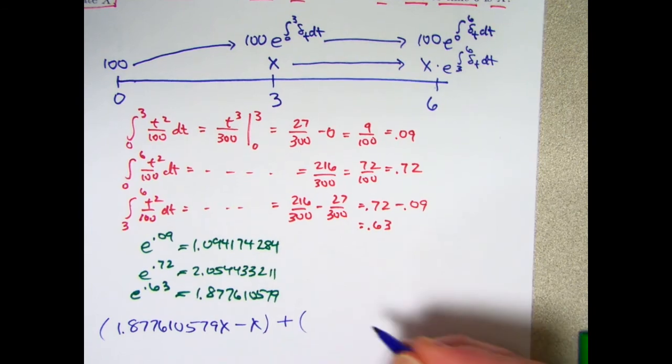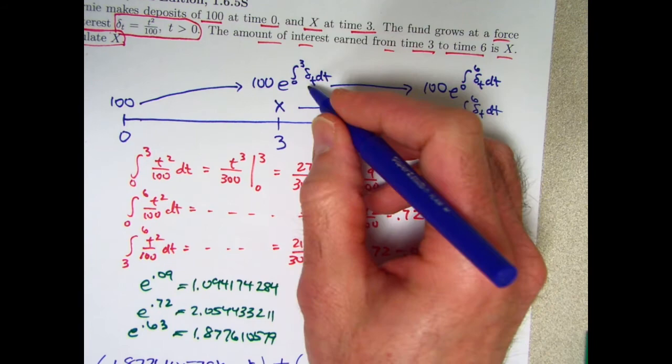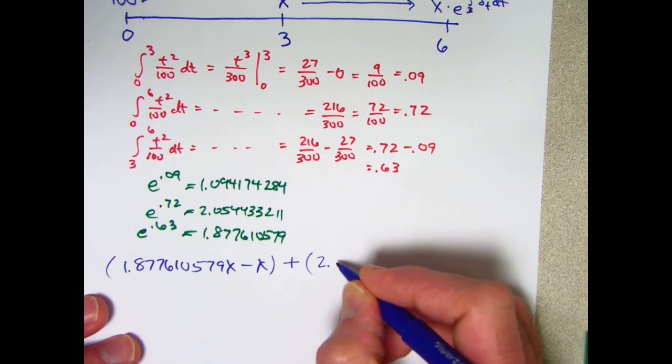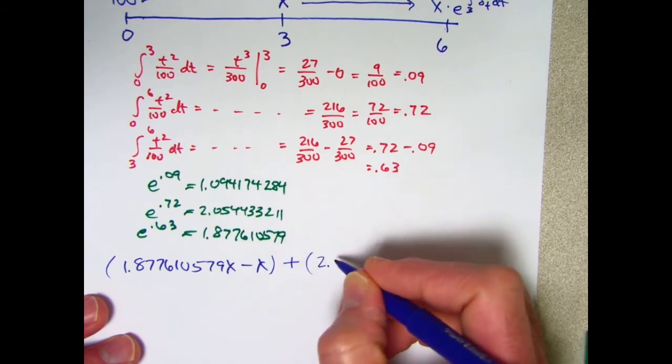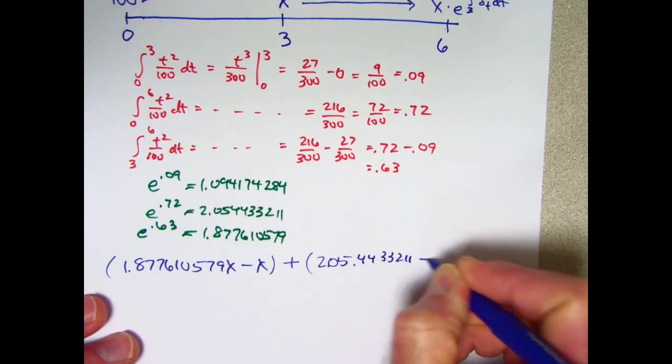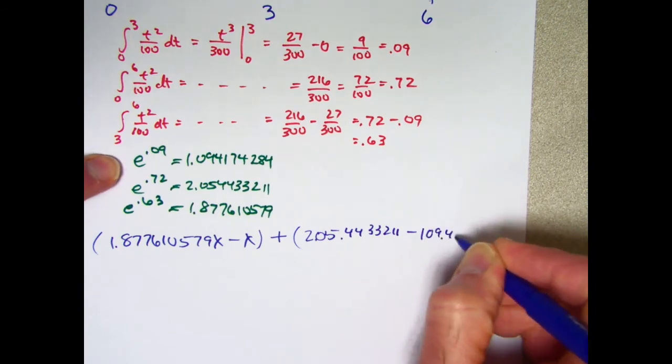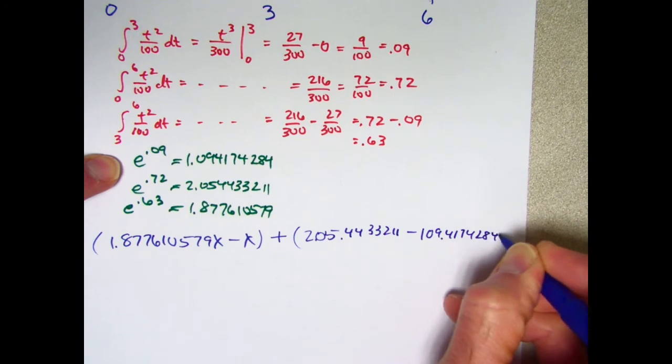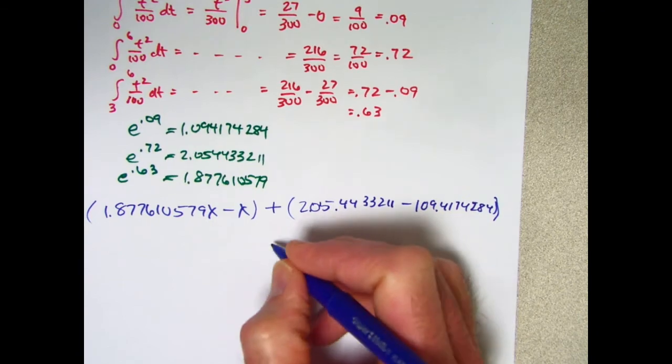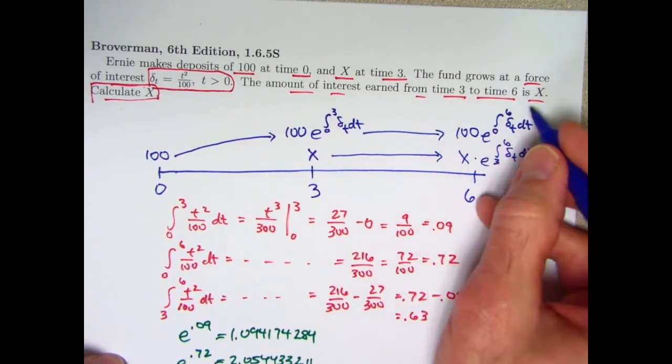Add on to that the interest earned by the initial 100 deposit from time 3 to time 6. This minus this. That's going to be... Let's see. I have to multiply by 100. I forgot about that. 205.4433211 minus, looking here, multiply that by 100, 109.4174284. I'm sure I could get away with fewer decimals, but I've already started this many, so I'll continue. Set this equal to x. Because you're told that the amount of interest earned from time 3 to time 6 is x.